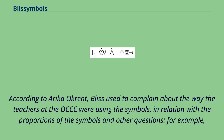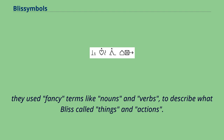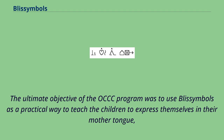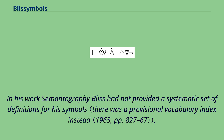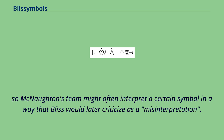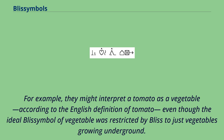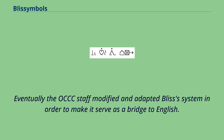According to Erica Okren, Bliss used to complain about the way the teachers at the OCCC were using the symbols, in relation to the proportions of the symbols and other questions. They used fancy terms like nouns and verbs to describe what Bliss called things and actions. The ultimate objective of the OCCC program was to use Bliss Symbols as a practical way to teach the children to express themselves in their mother tongue, since the Bliss Symbols provided visual keys to understand the meaning of English words, especially abstract words. In his work Semantography, Bliss had not provided a systematic set of definitions for his symbols, so MacNaughton's team might often interpret a certain symbol in a way that Bliss would later criticize as a misinterpretation. For example, they might interpret a tomato as a vegetable according to the English definition of tomato, even though the ideal Bliss Symbol for Vegetable was restricted by Bliss to just vegetables growing underground. Eventually the OCCC staff modified and adapted Bliss's system in order to make it serve as a bridge to English.